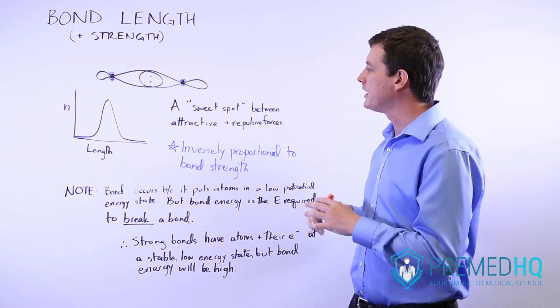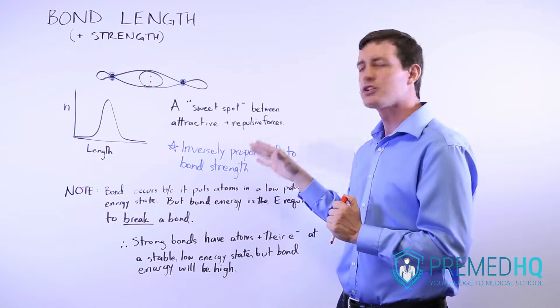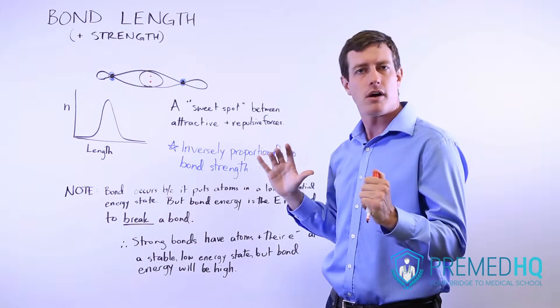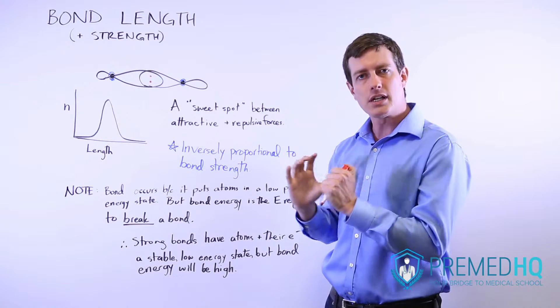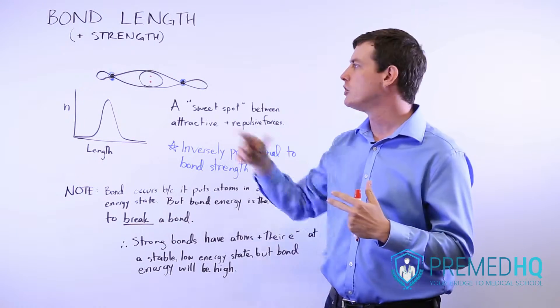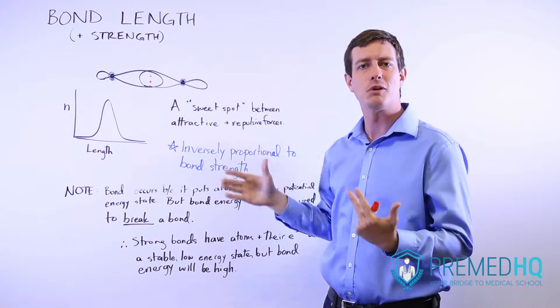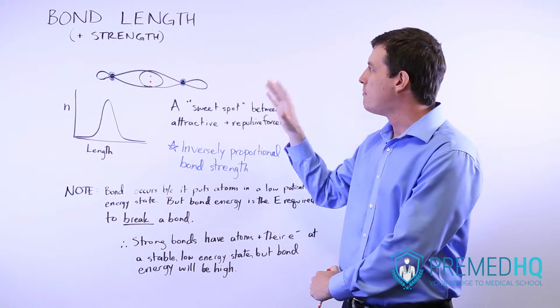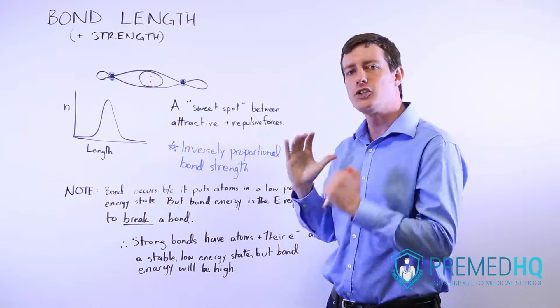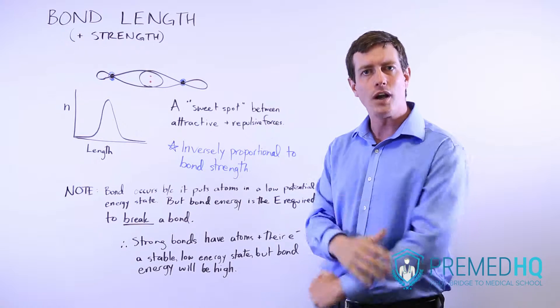The bond length is inversely proportional to the strength of the bond, meaning that a very strong bond will be much shorter because there are such attractive forces that they can overcome your usual electron-electron repulsion. Bond length is always inversely proportional to bond strength. A short bond is a strong one.